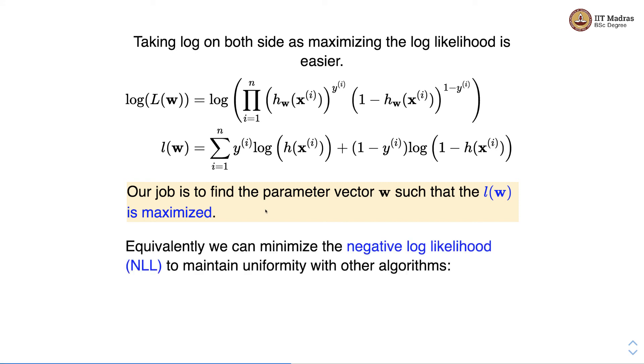Equivalently we can minimize the negative log likelihood to maintain uniformity with other algorithms. So we write the familiar term j of w and j of w is equal to negative of the likelihood.